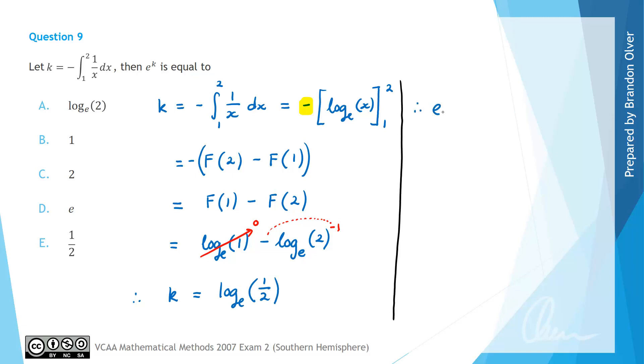So therefore, e to the power of k, which is actually what we were asked to find overall, is going to equal e to the power of log e of 1 half. And here we can remember that e and log e are inverse functions. So composing one with the other just cancels them out, essentially. So that means that this is just equal to whatever's inside the log, which is 1 half.